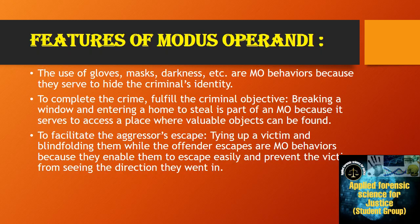Coming to the features of Modus Operandi. The use of gloves, masks, darkness, etc. are Modus Operandi behaviors because they serve to hide the criminal's identity. To complete the crime or fulfill the criminal objective, breaking a window and entering a home to steal is part of Modus Operandi because it serves to access a place where valuable objects can be found. To facilitate the aggressor's escape, tying off a victim and blindfolding them while the offender escapes are Modus Operandi behaviors, because they enable easy escape and prevent the victim from seeing the direction they went.